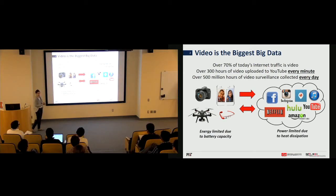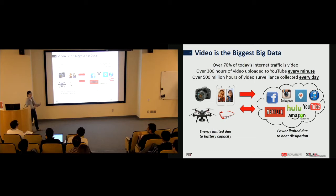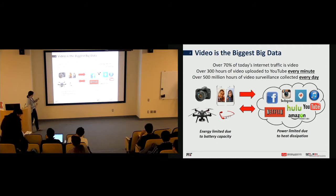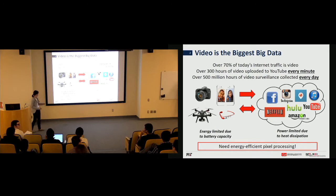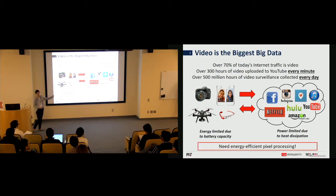Even where cloud processing happens — in data centers — the amount of compute is limited by power consumption and heat dissipation. These days, data centers are even built near power generation plants. Regardless of where you process pixels, you need energy-efficient pixel processing. Our work focuses on how we can do more processing on the edge device, though these principles also apply to the cloud.